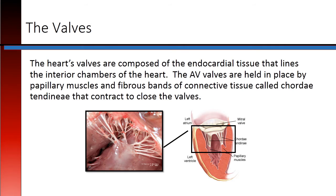The heart's valves are composed of the endocardial tissue that lines the interior chambers of the heart. The AV valves, or your tricuspid and mitral valves, are held in place by papillary muscles and fibrous bands of connective tissue called chordae tendinae that contract to close the valves.